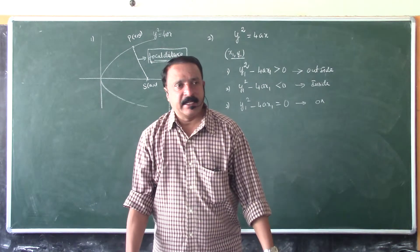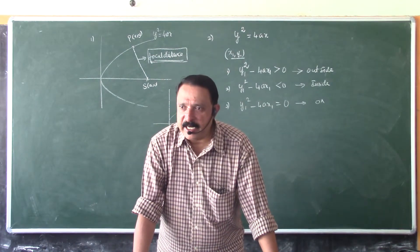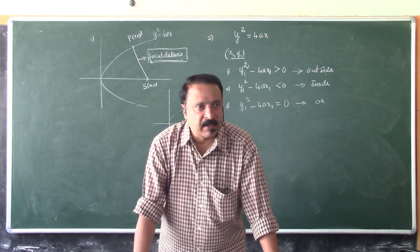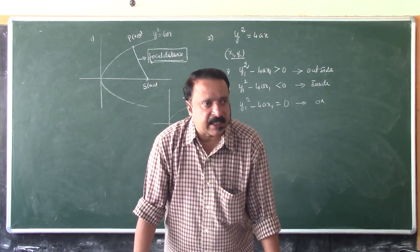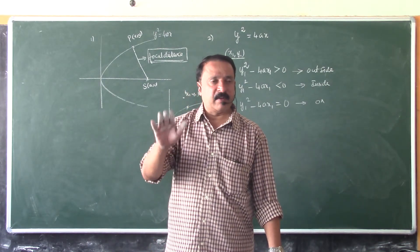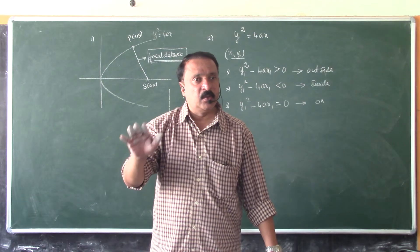So we can decide whether a point lies outside, inside, or on the parabola accordingly as y1 square minus 4Ax1 greater than zero, y1 square minus 4Ax1 less than zero, y1 square minus 4Ax1 is equal to zero.